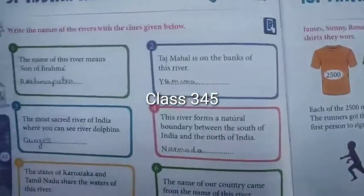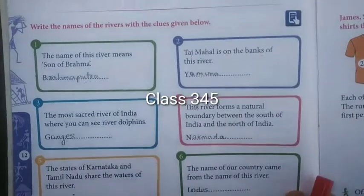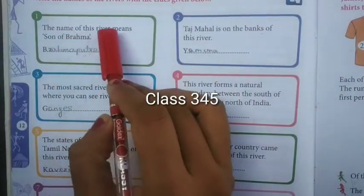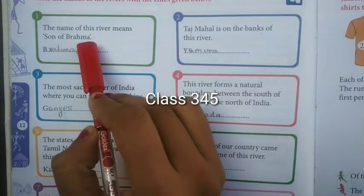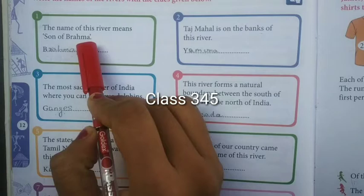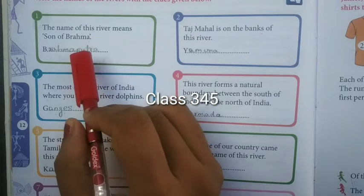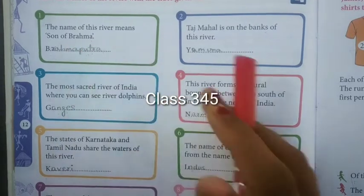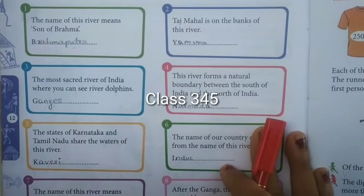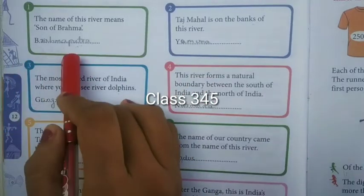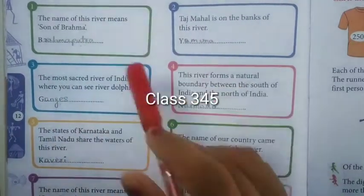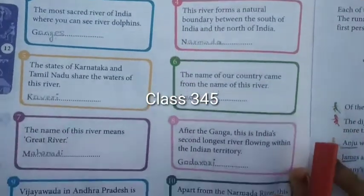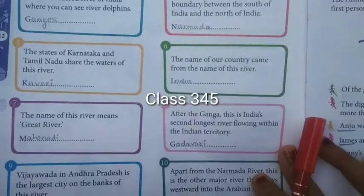Next is Indian rivers — very, very important. The name of this river means 'Son of Brahma.' What river is it that we say is the Son of Brahma? Brahma Bhagawan is from the Holy Spirit, so that is the Brahmaputra. These Indian names and Indian rivers are very, very important. Write them down in your notebook one time.